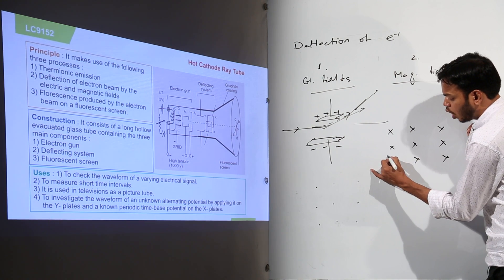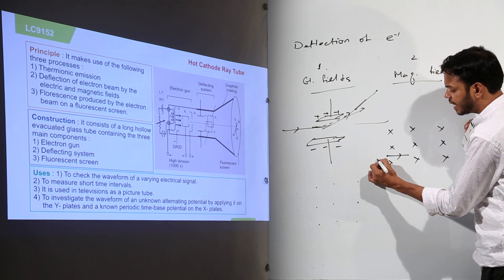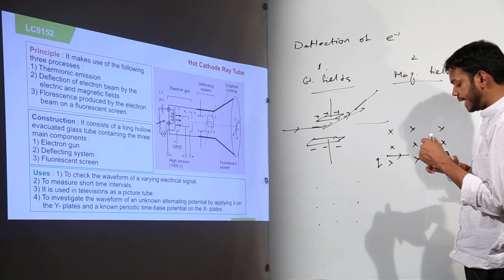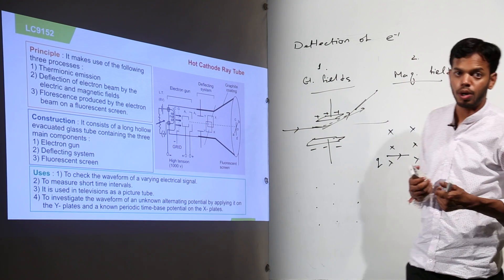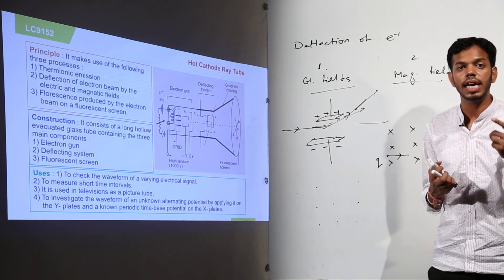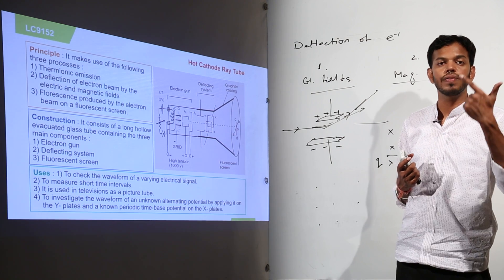Now when an electron or a charge particle enters, any charge particle, let me represent the charge particle by Q. If it enters a region of magnetic field, it gets deflected because of some force which is acting on this charge particle.